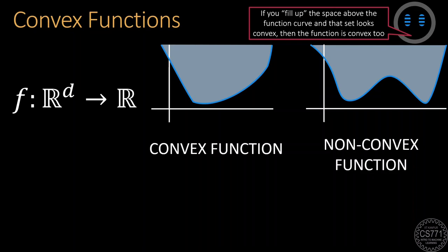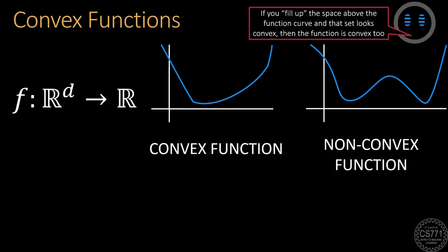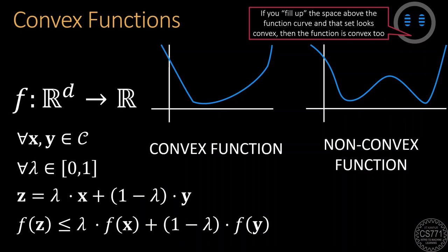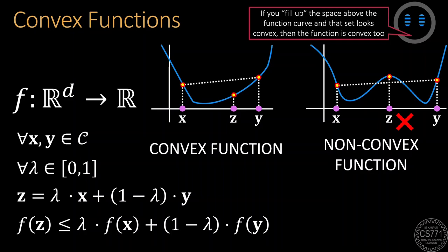However, there is an alternate definition too. A function is called convex if it lies below all its cords. The mathematical way of writing this requirement is as follows. Take any two points X and Y and combine them in the ratio lambda and 1-lambda for lambda between 0 and 1 to get a point Z on the line segment joining X and Y. We now combine the function values at X and Y in the same ratio as well. A function is convex if the function value at Z is always less than the combined function value. Visually, this means exactly what we wanted. That a function never exceeds any of its cords. A function is called non-convex if it violates this requirement in at least one case.